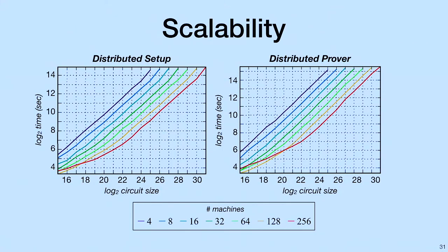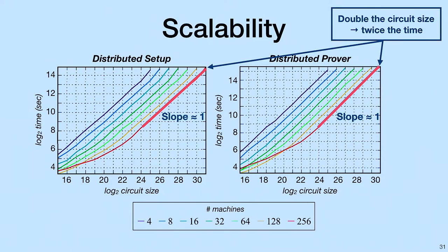We now evaluate for scalability. On the left, we have the distributed setup, and on the right, you have the distributed prover. Note that these graphs are in log-log scale. Notice that here, the slope is approximately 1.1. The pattern that we see is that as we double the circuit size, it takes roughly twice the time.